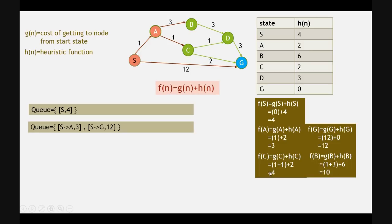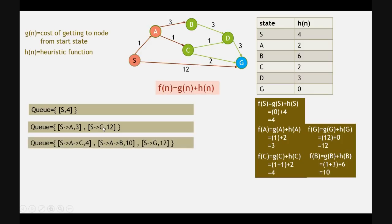After sorting, s→a→c with f = 4 comes first, s→a→b with f = 10 comes second, and s→g with f = 12 comes last. The queue is now sorted in ascending order based on their f(n) values.